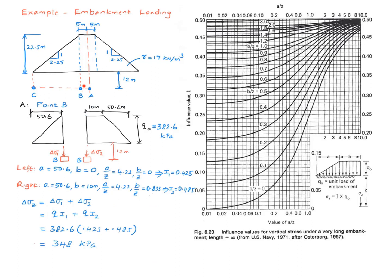Now let's consider point B. The approach is basically the same. You cut the embankment along this vertical line and separate into two halves, or two parts basically. Calculate the stress change due to each one of these. Sum it up in order to calculate the total vertical stress change.